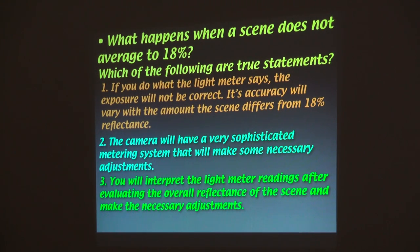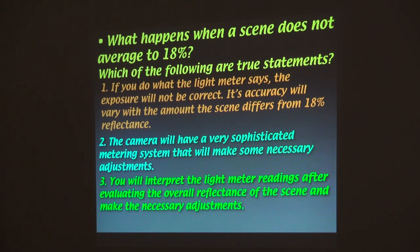Most of the time you can take the exposure as given. The way you tell is by the histogram — you can tell by the histogram. You didn't used to be able to do that; you had to think. But now you can tell by the histogram. If the histogram is perfectly right in the middle, it's 18%. If it's a little skewed one way or the other, it's a little off — but that doesn't mean it's wrong.